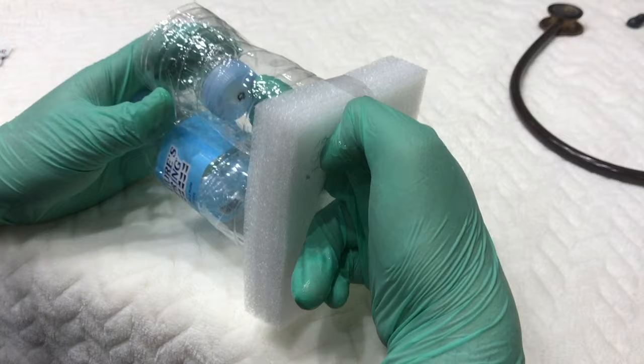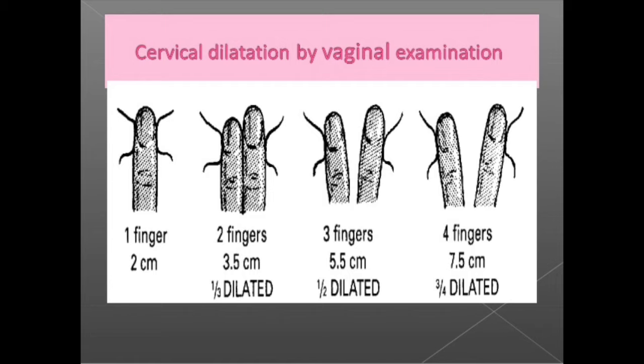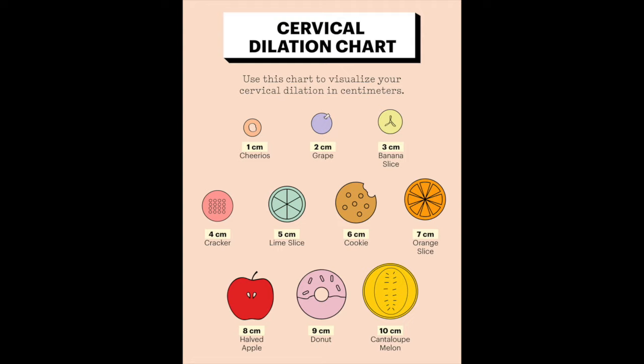Insert the index and middle fingers of the examining hand carefully into the vagina. Determine the cervical dilatation. Cervical dilatation is determined by estimating the average diameter of the cervical opening by sweeping the examining fingers from the margin of the cervical opening on one side to that on the opposite side. The diameter traversed is estimated in centimeters. The cervix is said to be fully dilated when the diameter measures 10 centimeters.